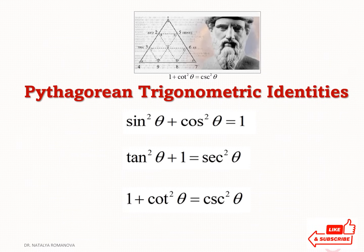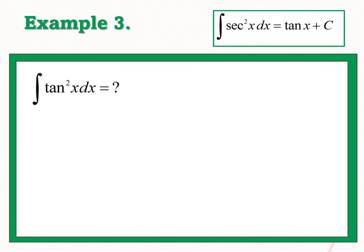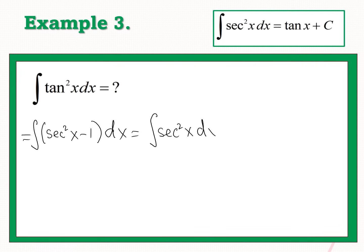We will use Pythagorean identities to integrate tan²x and cot²x. In particular, tan²θ equals sec²θ minus 1. So instead of tan²x we can write (sec²x minus 1) dx. We split this as the difference of integrals: ∫sec²x dx minus ∫dx. The integral of sec²x dx equals tanx.